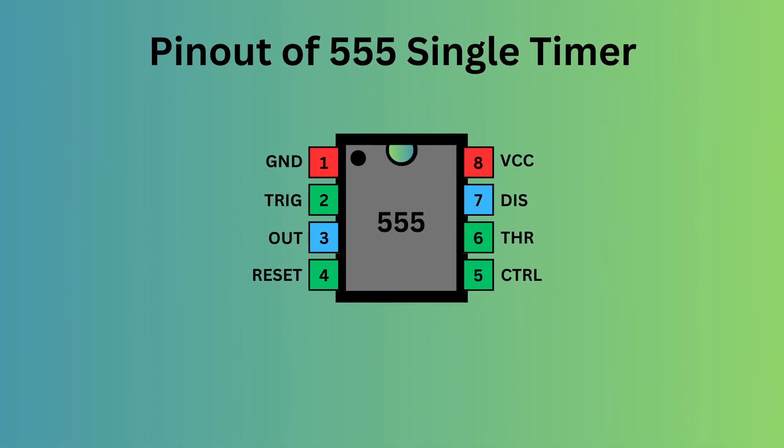The 555 timer IC comes with 8 pins. There is a notch or a dot on the chip's body. Pin 1 located at the top left serves as the ground supply. Pin 2 is trigger. It is used to start the timing interval in both monostable and astable modes. Pin 3 is output. It delivers the result of the timer's operation based on its mode, either monostable, astable, or bistable.